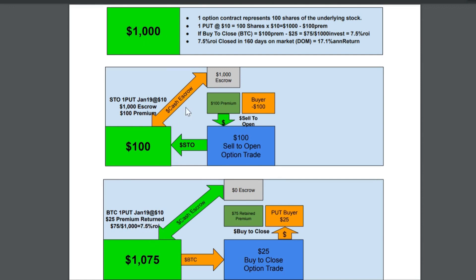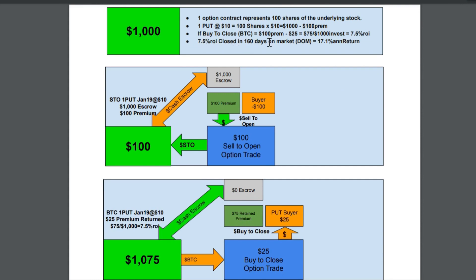I invested $1,000. I kept $75 of the $100. I now have $1,075 in my account. The $25 has gone back out of my account through the option contract, paying the buyer of the put back $25 out of the $100. I retained $75 in this transaction, giving me a return of 7.5% in 160 days on the market.